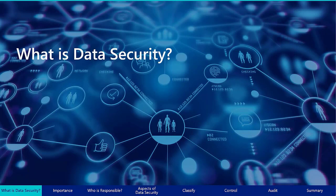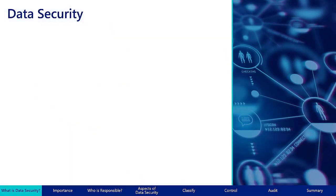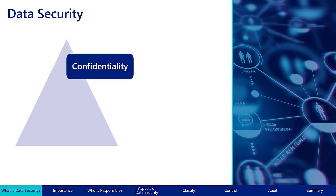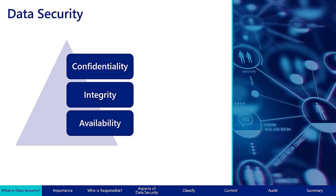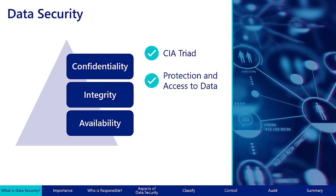What is data security? Data security is more than ensuring only authorized users can access protected information. Data security is the process and function of protecting the confidentiality, integrity, and availability of digital data, sometimes referred to as the CIA triad. It involves the planning, development, and execution of security policies and procedures to provide the proper protection of and access to data.